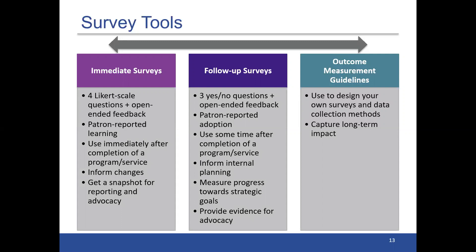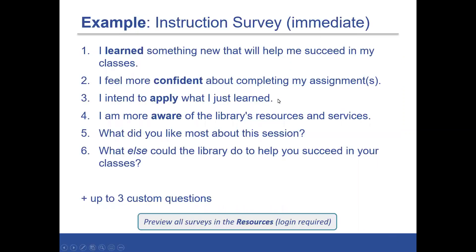We also provide a whole lot of resources to help libraries do other types of data collection and extend their work using outcome measurement. This is the instruction immediate survey — you can see the words in bold showing how those four questions align to the four key outcome measures, and then you have those two open-ended questions at the end. Libraries can also add up to three custom questions of their own to any of these surveys.